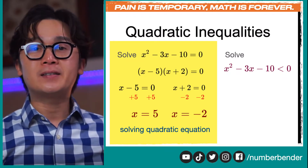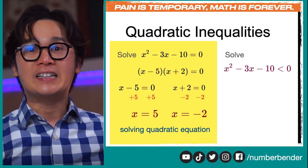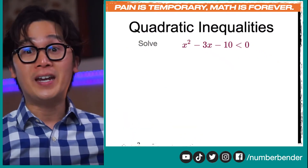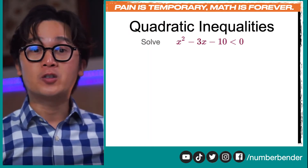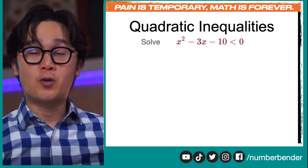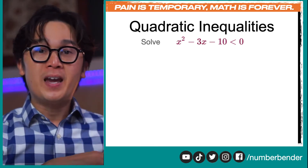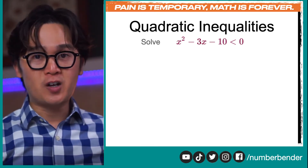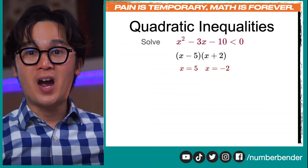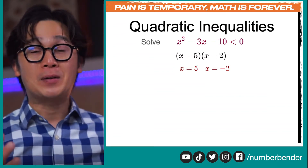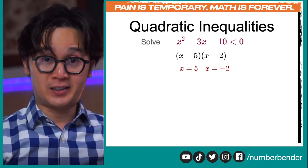The steps for the inequality will be a little bit different and a little bit more involved compared to the equation. The first step is the same — we factor and use the zero product property to find what we now call critical points or critical numbers, which in this case are negative 2 and 5.